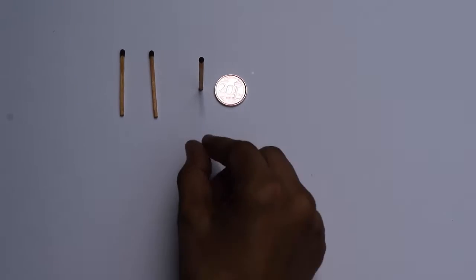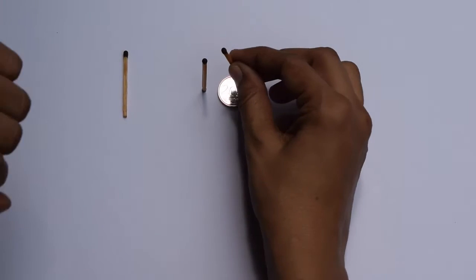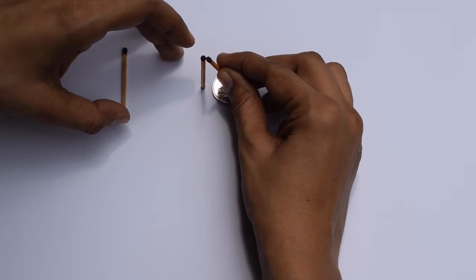Next, place your coin near the matchstick you just ensconced and lean a second match resting against the standing match on the coin.